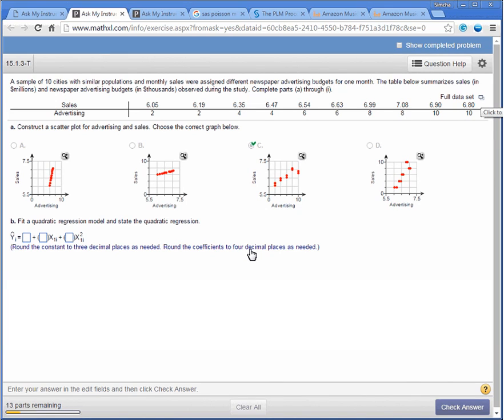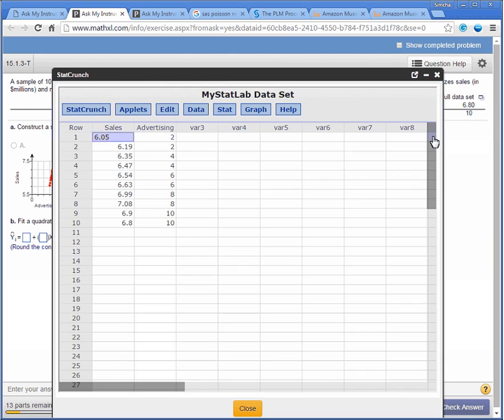Now the main point of this video is to show you how to use StatCrunch to come up with the parameter estimates, the constant or the intercept, the parameter in front of the X1 or the original X, and the X squared that we're going to create. So I'm going to click on the full data set, open in StatCrunch, which hopefully works.